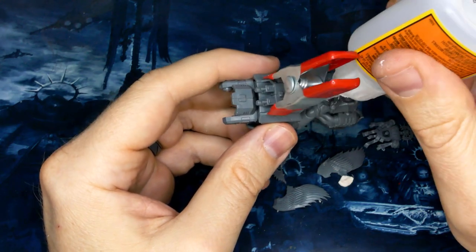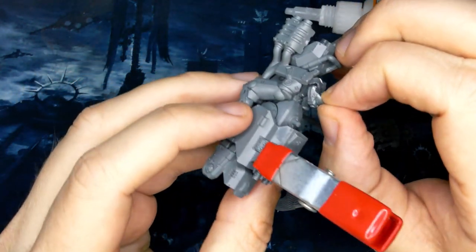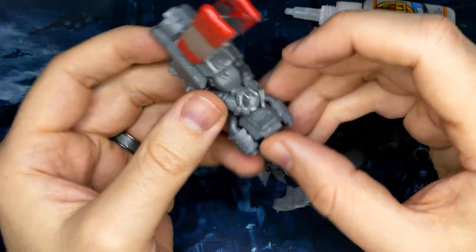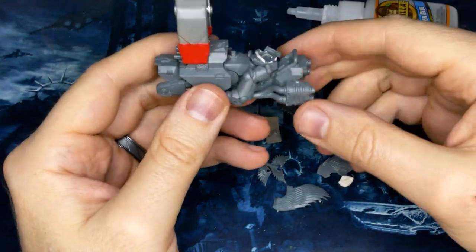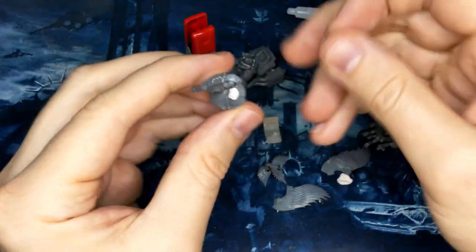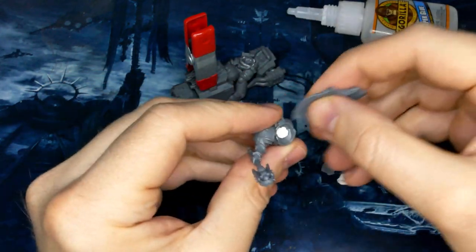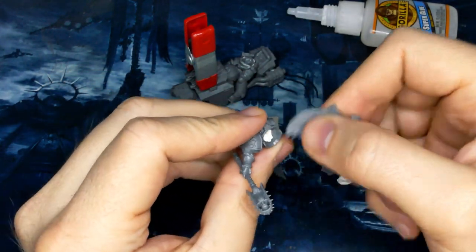For the waist, make sure you get a really good dollop of glue in there. It's a really small connection point, and the last thing you'd want is that abdominal plate to come loose. And now it's time to say goodbye to my best friend. Unlike your best friend, you don't want Sticky Tack to stay around forever.